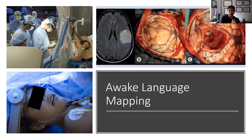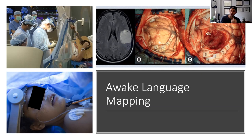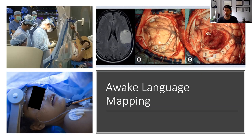With awake surgery, there are a lot of different ways to do it, but in general, the way I do it is: the patient goes to sleep but is not intubated — they receive a sedative. You do your work, open the skull, open the skin, get down to where the tumor is, and then you wake the person up. They sit there and talk to you, and they also move their arms — whatever you need them to do, depending on the area you're worried about.